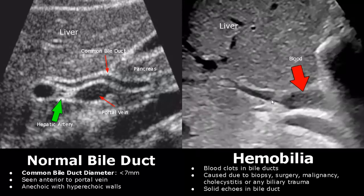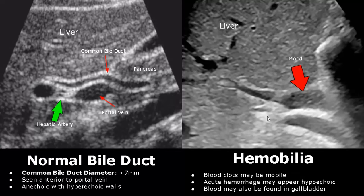Hemobilia refers to blood clots in bile ducts; it usually occurs after a biopsy in this area. It can also occur due to surgery, malignancy, cholecystitis, or any biliary trauma. Solid echoes will be seen in the bile ducts, and the blood clots may be seen floating and moving. In acute hemorrhage, the bleeding is fresh and may appear hypoechoic because the blood hasn't clotted yet.